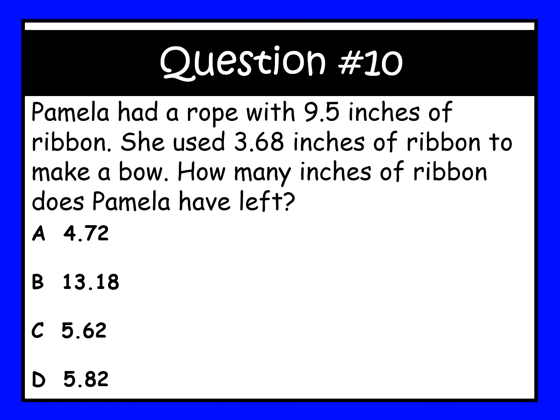Question number ten. Pamela had a rope with nine and five tenths inches of ribbon. She used three and sixty-eight hundredths inches of ribbon to make a bow. How many inches of ribbon does Pamela have left? You have 30 seconds to answer this question.